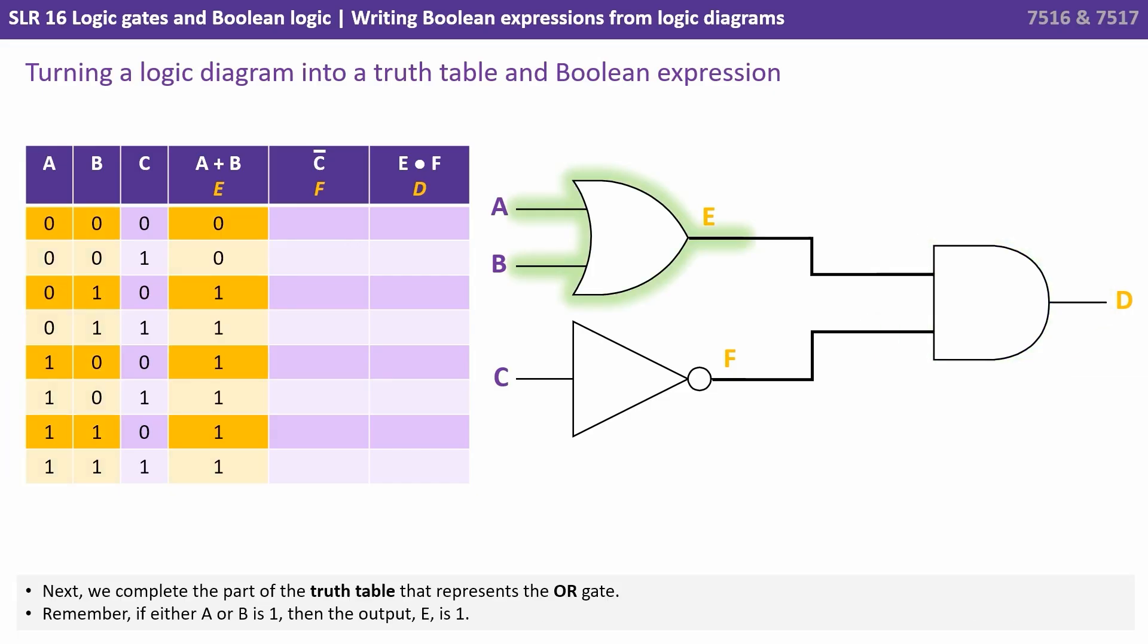Next we complete the part of the truth table that represents the OR gate. Remember if either A or B is 1 then the output column E is 1. So we've done that there.